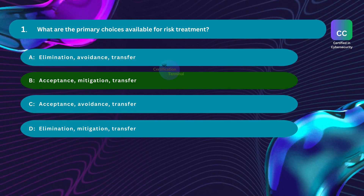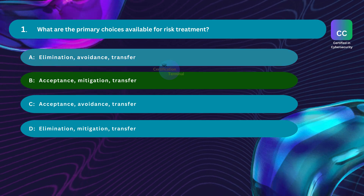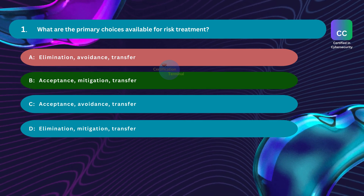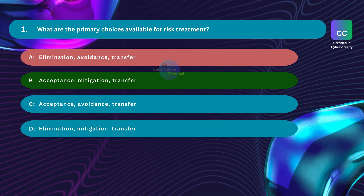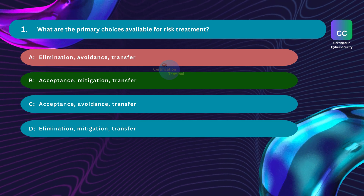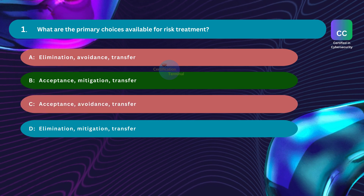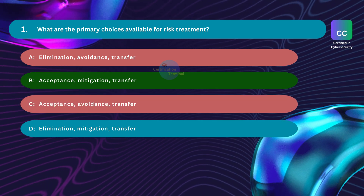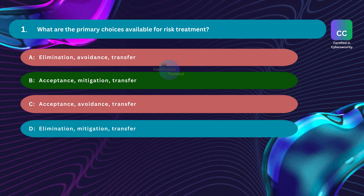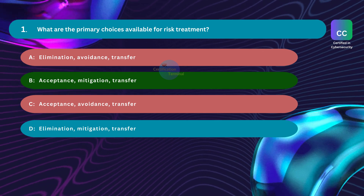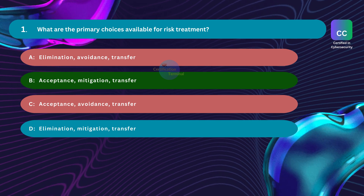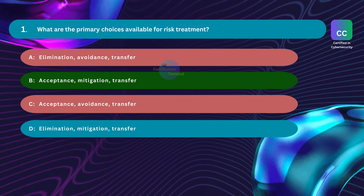Option A, elimination, avoidance, and transfer, is incorrect. Elimination and avoidance are similar concepts, both aiming to remove or stay away from the risk. Transfer is a valid risk treatment option, but elimination and avoidance are not always practical or possible for all risks. Option C, acceptance, avoidance, and transfer, is incorrect — it excludes mitigation, which is an important strategy for reducing impact or likelihood of risks. Avoidance may not always be practical.